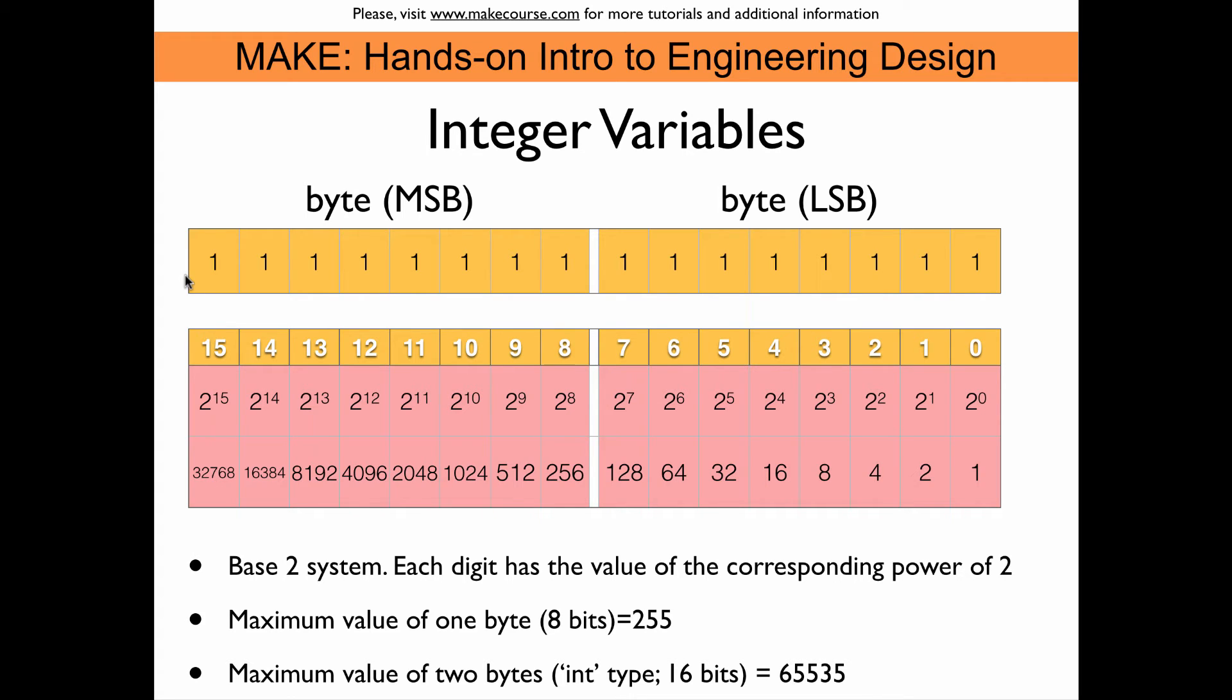So the biggest number that you can put into this 2-byte integer variable is of course by setting all bits to a 1. The number that corresponds to that, you can get by adding up all the base 2 numbers that we just calculated. And so if you do that, for a 16-bit number, the biggest number that you can put into this variable is 65,535. If you do the same just for one of the bytes, then you add up from 1 to 128, and if you do that, you will get 255. So that is the largest number you can put into a single byte.